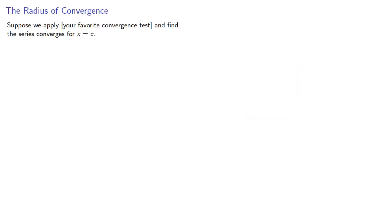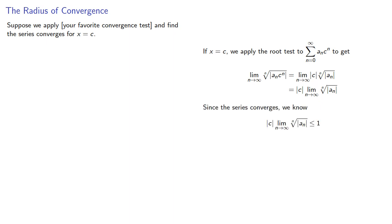So let's think about this. Suppose we apply your favorite convergence test and find that our series converges for x equal to c. So, for example, if x equals c, we apply the root test to our series and find... Now, we're assuming that our series converges at c, which means that this limit has to be less than or equal to 1.